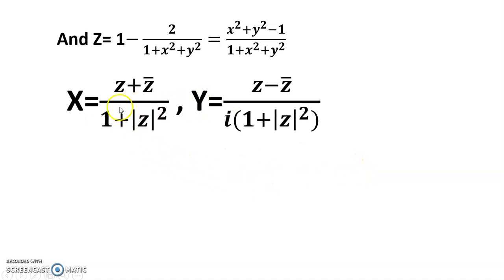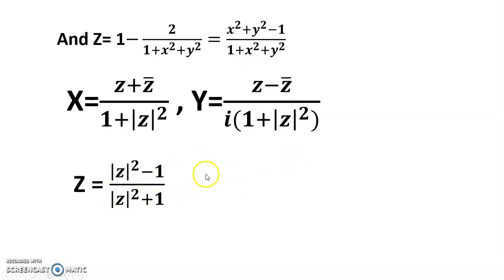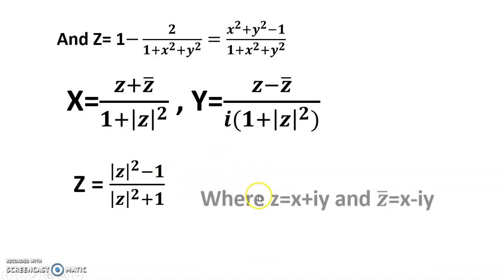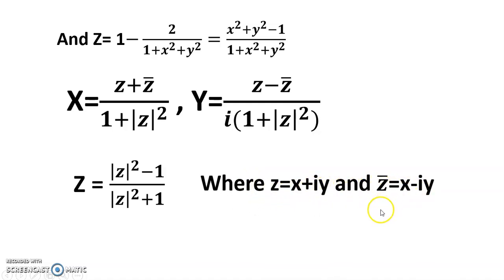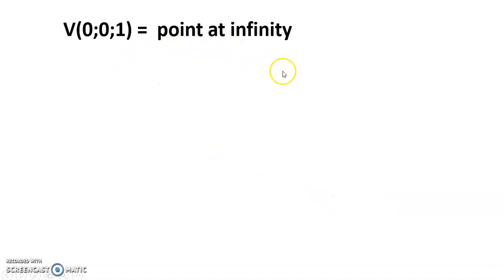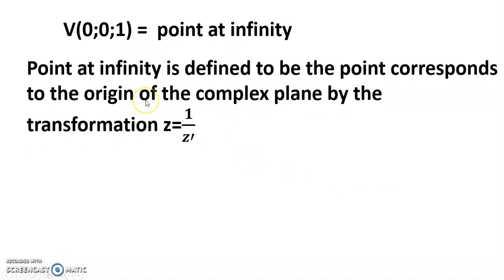Now setting z = X + iY as the complex coordinate, we get z + z̄ = 2X/(1 + |z|²), and z − z̄ = 2iY/(1 + |z|²), with |z|² = X² + Y². The capital Z coordinate equals (|z|² − 1)/(|z|² + 1), where z = x + iy. The vertex V = (0, 0, 1) corresponds to the point at infinity.